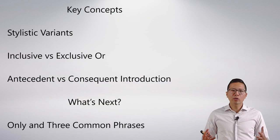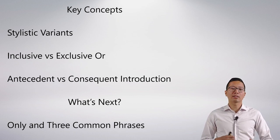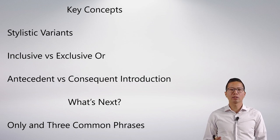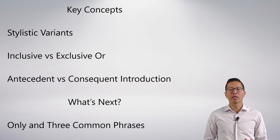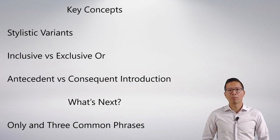In this video, we looked at stylistic variance, and we did some really important things. We understood the difference between inclusive and exclusive or, and we covered 'unless.' The most difficult part of unit three is being able to identify what's an antecedent and what's a consequent in a conditional. Coming up next, we'll take a closer look at 'only' to complete our understanding of conditional statements, and look at three common phrases that have very important symbolizations.